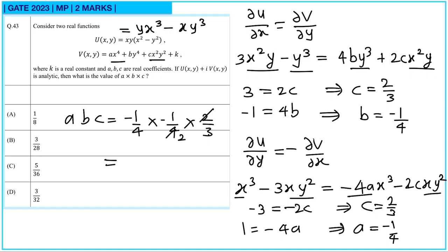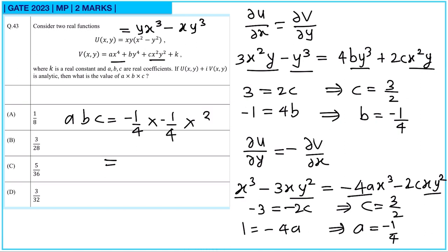Computing a·b·c = (−1/4)·(−1/4)·(3/2): the two negatives cancel, giving (1/16)·(3/2) = 3/32. So option D is correct.